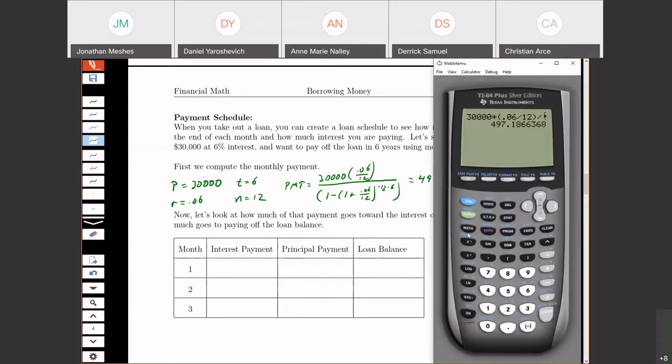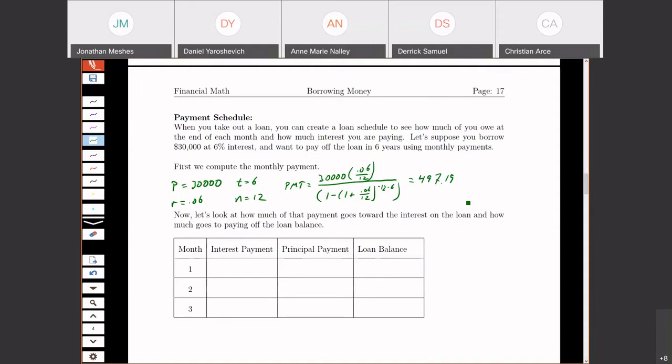And again, if I were to use my finance app, the big N, remember, is little n times T. So 12 times 6. The interest rate, remember to leave it as a percentage, don't convert it to a decimal. So if we get a little bit careful about some of those things in here, and then I should get the exact same number. So this is what we're going to keep.